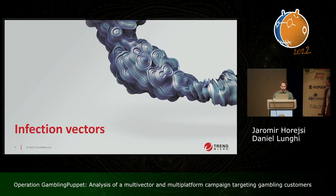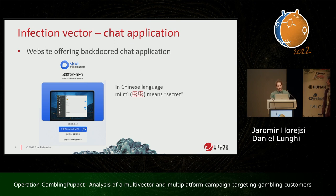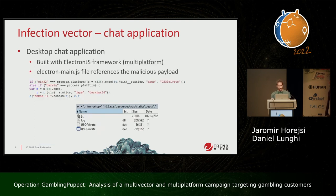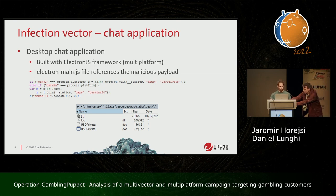The first infection vector is a chat application offered through a website. The chat application was called Mimi, which in Chinese means 'secret,' and was advertised as a secure application. It was offered for Windows and Mac platforms, and the website is written in Chinese. When we look at the application itself, we found it was written using the Electron JavaScript framework, based on the Node.js runtime, meaning it can run on different platforms without changing the code — you just need to recompile it.